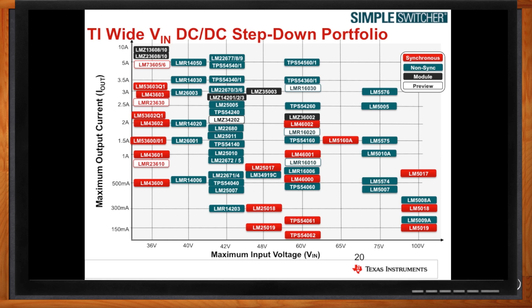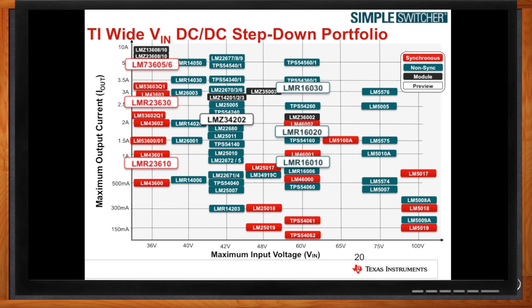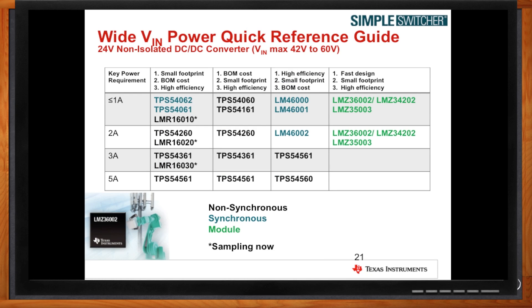We are always developing the latest and greatest devices at TI, so even though some parts have not been released yet, they are available as preview devices — you can still get the data sheet and make designs in Webbench, and as soon as they release to market you'll be able to sample the part. Here we have about 40 to 50 different parts you can consider. Whether your key concern is small footprint, low BOM cost, high efficiency, or fast time to market, we have devices to fit your need with load currents all the way up to 5 amps — all for greater than 36-volt rails that will power a 24-volt solution.